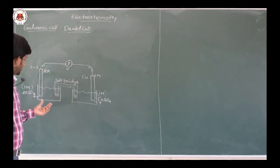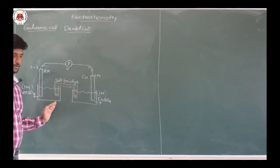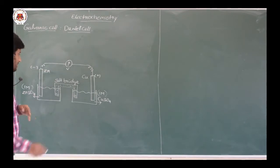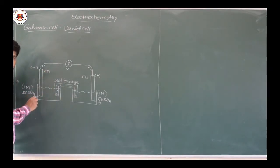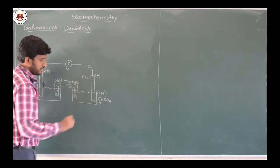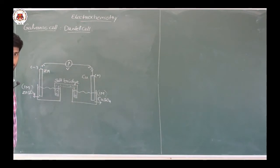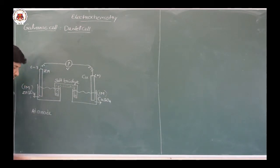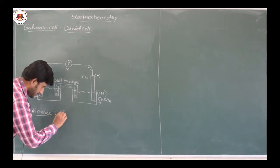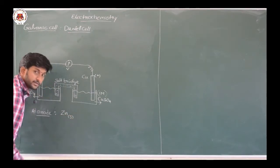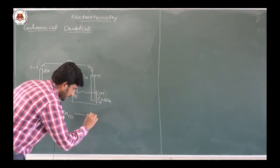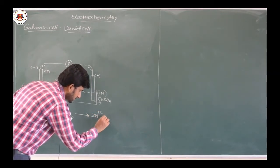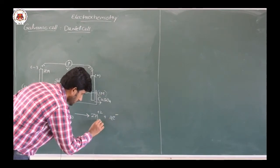What does Daniel's cell consist of? It consists of two half cells or two redox couples: a zinc rod dipped in zinc sulfate solution and a copper rod dipped in copper sulfate solution. In this, we have seen that at the anode, oxidation occurs. Which oxidation? Zinc.